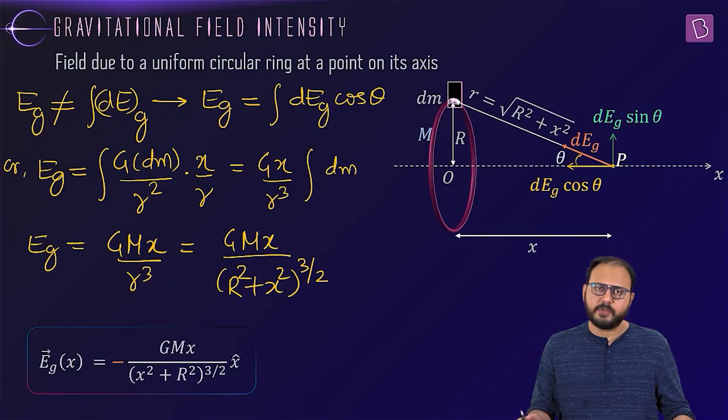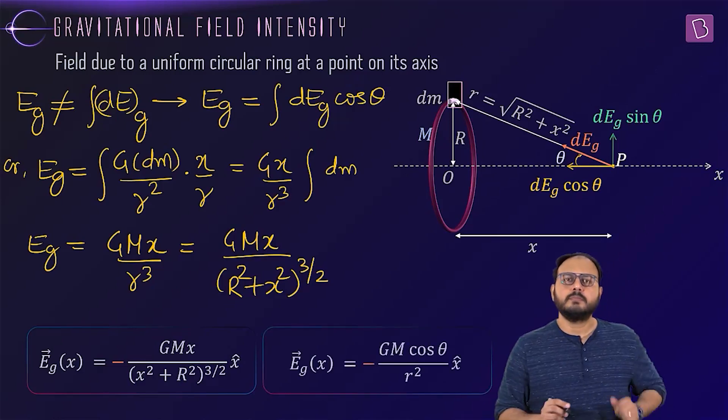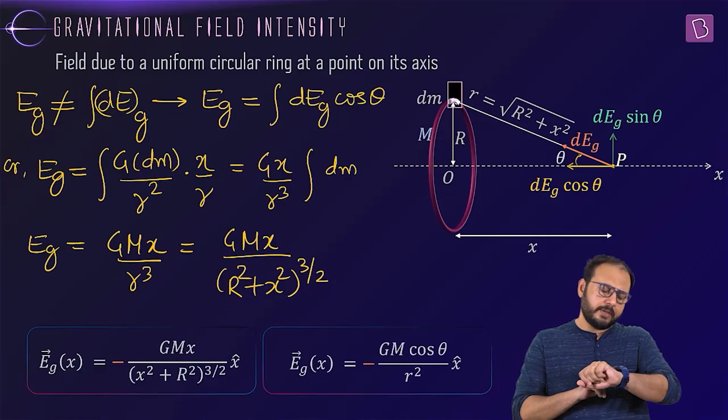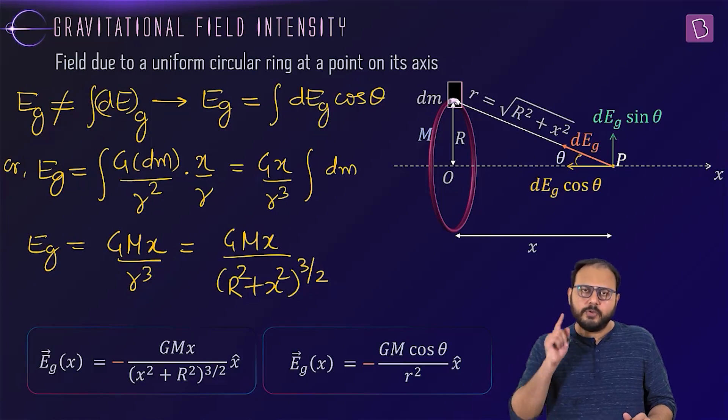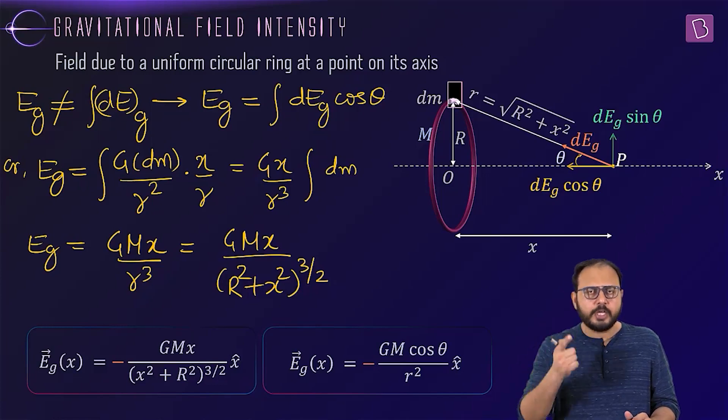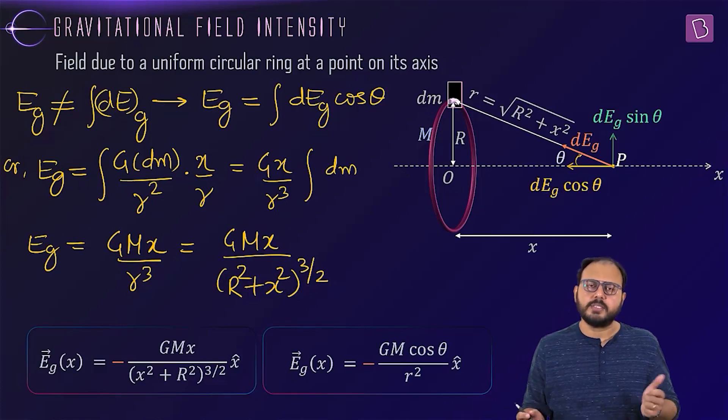So now here is a bit of extra information. Click. I want you to remember one more result. This one. But why? I'll tell you. I think today itself. Minus gm cos theta by r square. Remember that. Keep it drilled in your mind. It doesn't change anything. It's just an extra result.